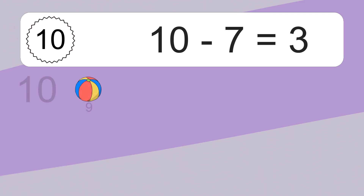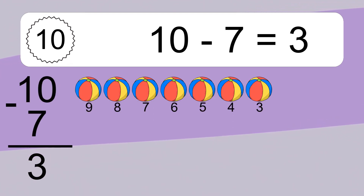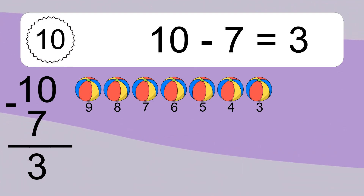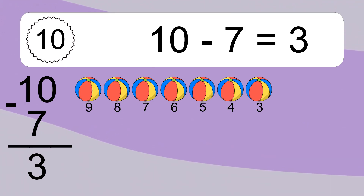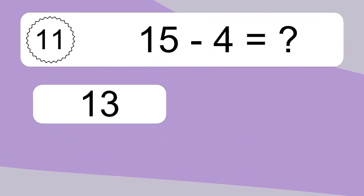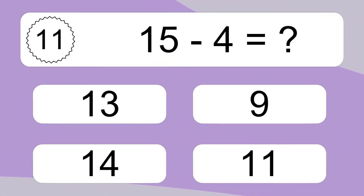10 minus 7 equals what? 10 minus 7 equals 3. Let's count it: 9, 8, 7, 6, 5, 4, 3.